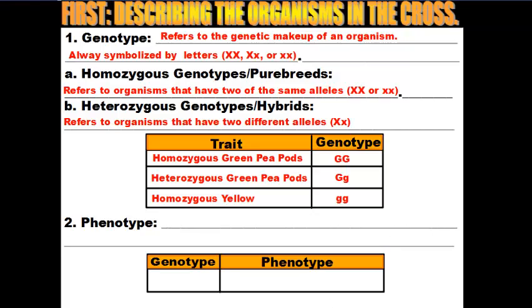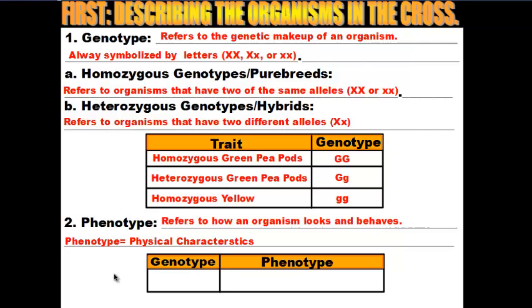Now that we've discussed genotypes, we're going to move to the other key term: phenotype. Genotype refers to the genes or genetic makeup of an organism, whereas phenotype refers to how an organism looks and behaves — its physical characteristics. For example, if you're given a genotype of homozygous dominant big G, big G, the phenotype is the appearance of that organism. Since big G big G stands for green peapod color, the phenotype would be green.